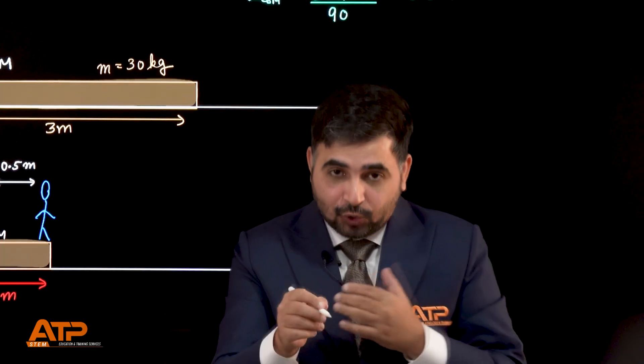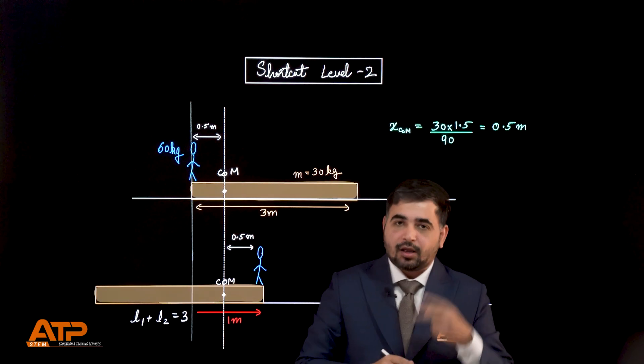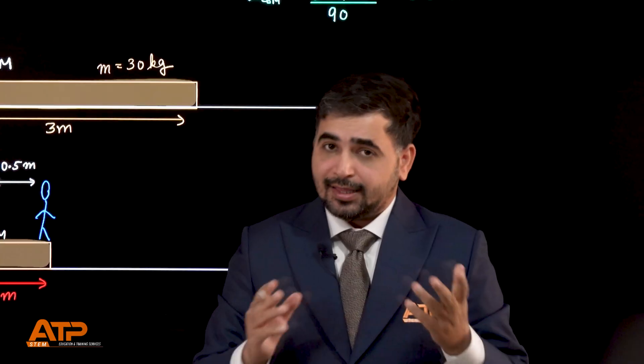And in this rotation, you can see from the diagram that the distance moved by the person is 1 meter. And how much will be the distance moved by the plank? 2 meters. That's it.